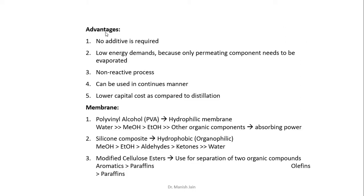The advantages of the pervaporation process over other processes: First, no additives are required. Since pervaporation is used to separate azeotropic mixtures, traditional separation processes would need an azeotropic additive, but here we use a selective membrane so no additives are required. Second is low energy requirement, because only the selectively permeating component has to be vaporized, whereas in distillation, both components are vaporized — so energy requirement is relatively low.